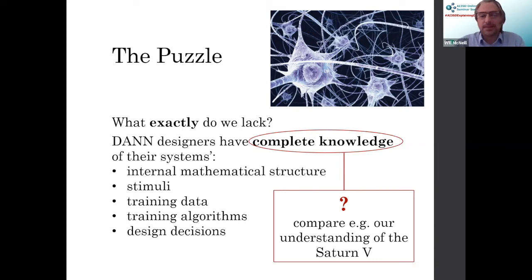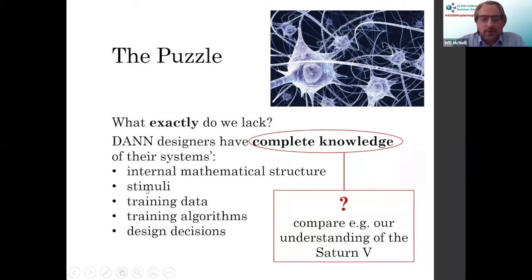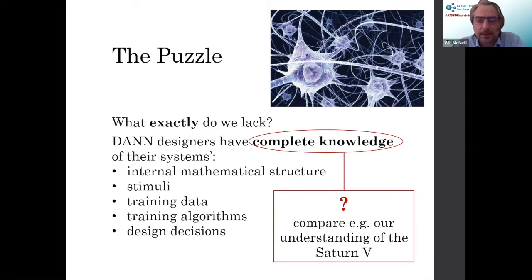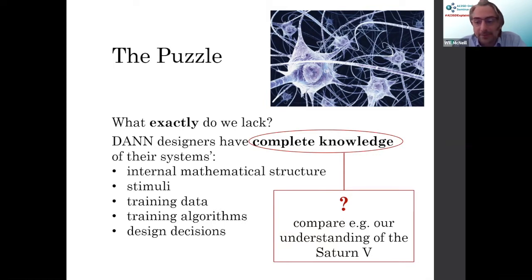So there's the puzzle. In what sense could it possibly be that artificial neural networks are explanatorily opaque, given that we have complete knowledge of their systems, their history, their inputs, and everything else?